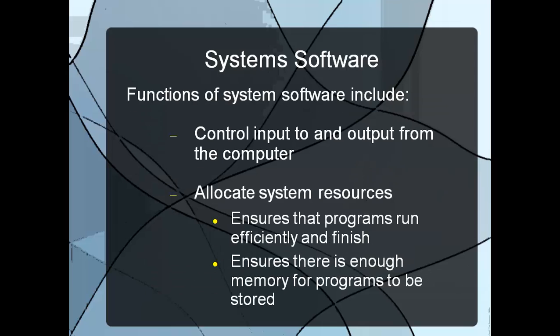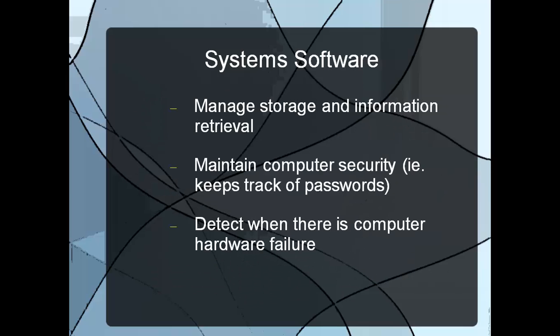System software performs several functions. First, it controls input and output in a computer. It allocates system resources, making sure everything runs efficiently — dividing time between printing a document, surfing the internet, and typing. It also manages memory so all your programs can be stored at the same time, manages storage and information retrieval, and maintains computer security — your antivirus software is an example of system software. It can also detect computer hardware failures and show you how to connect hardware properly.